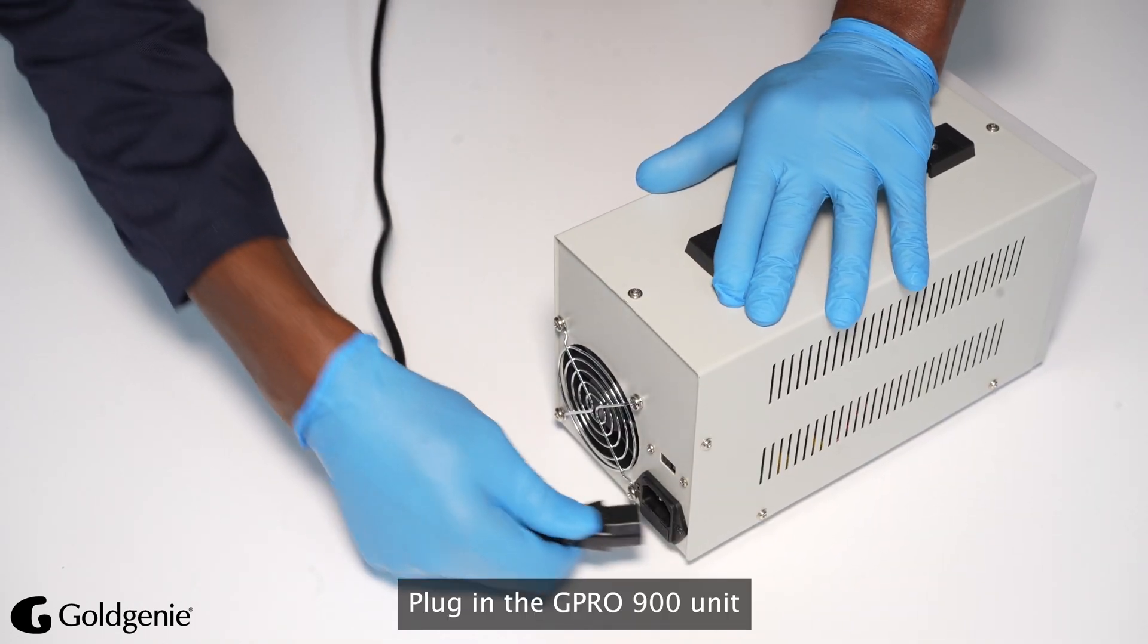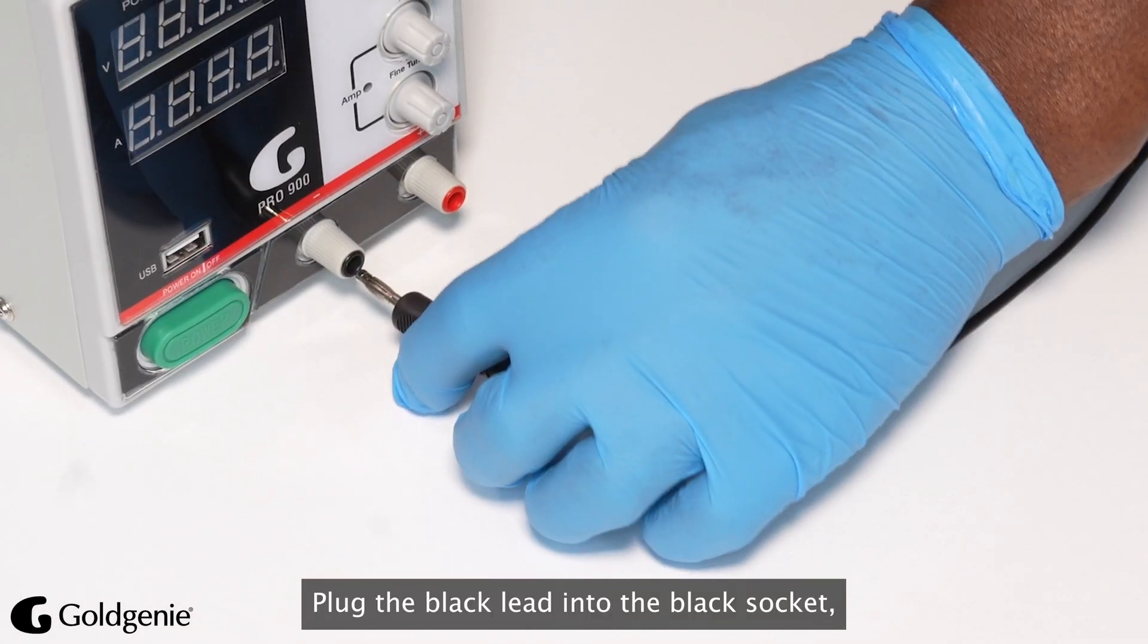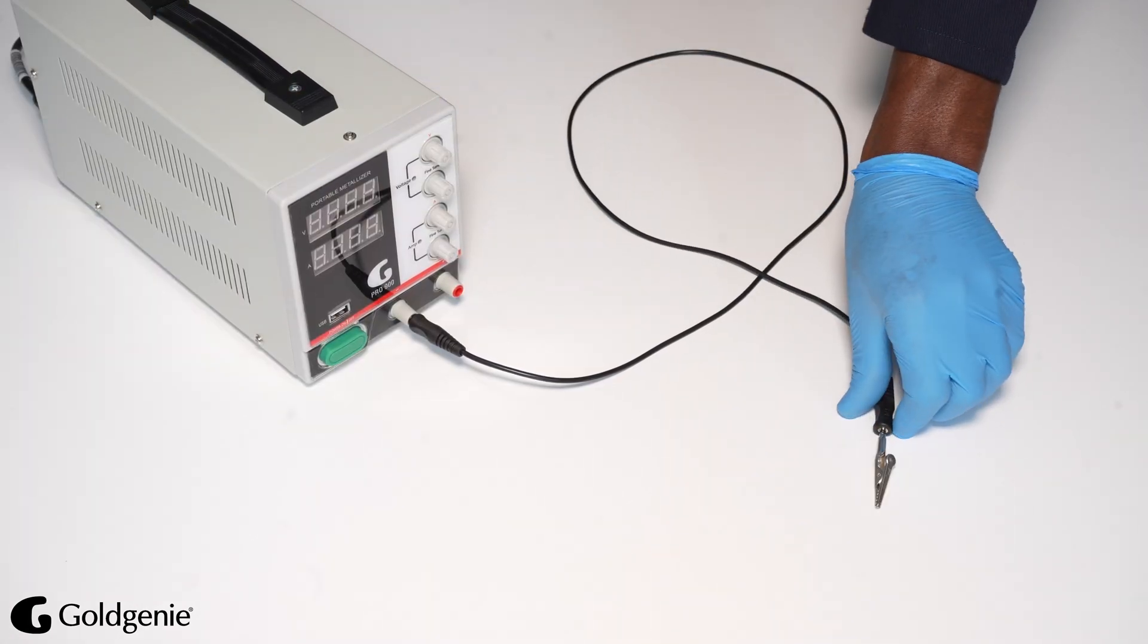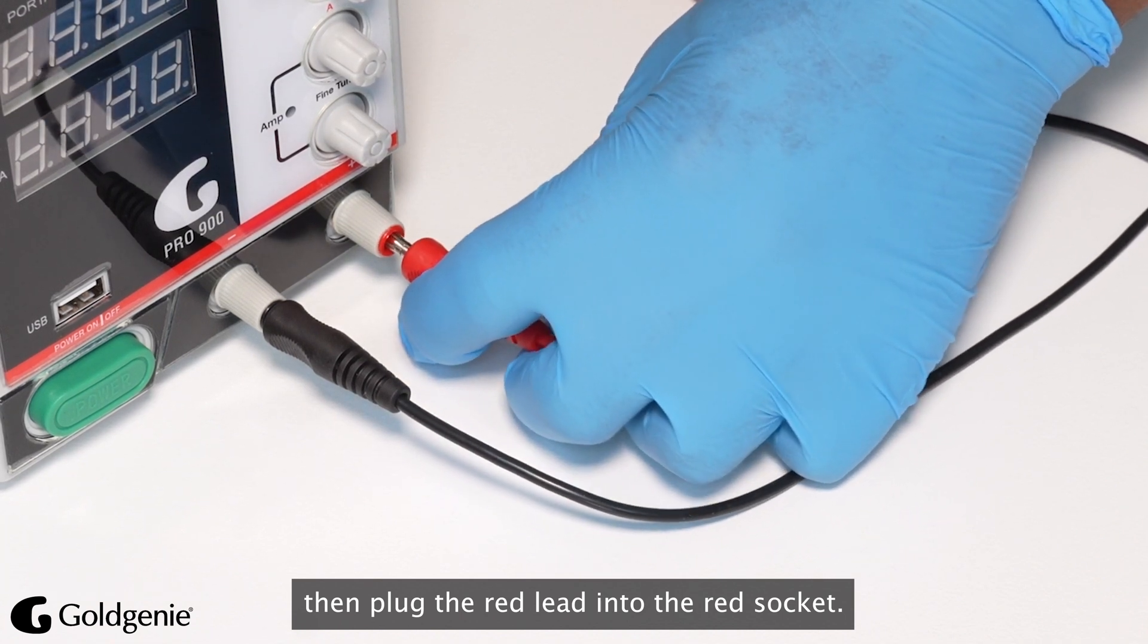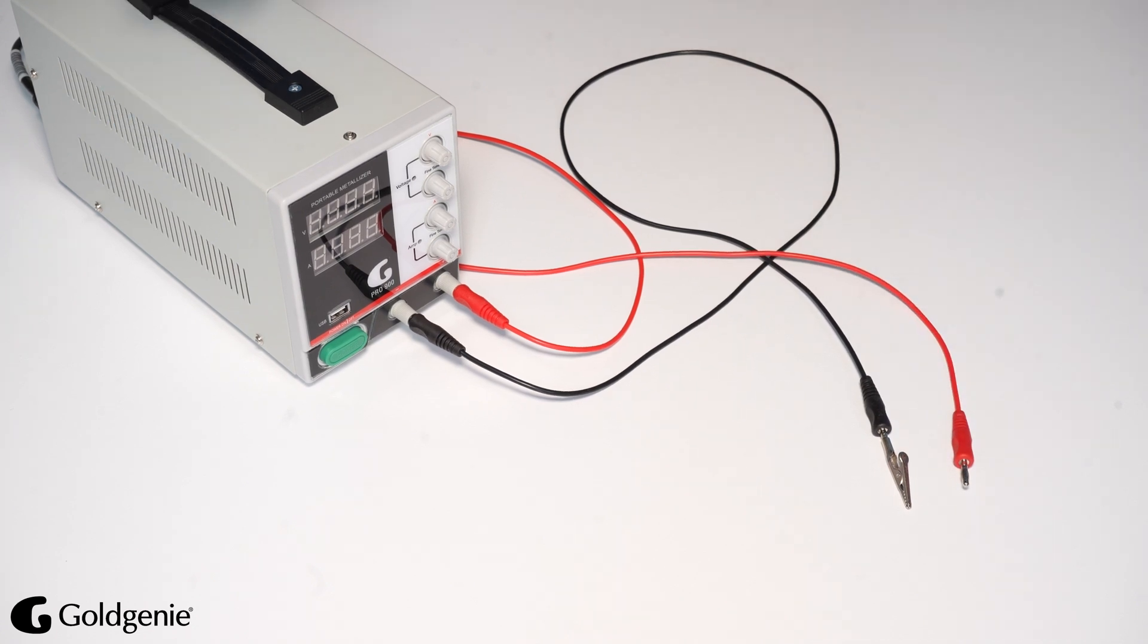Plug in the G Pro 900 Units. Plug the Black Lead into the Black Socket, then plug the Red Lead into the Red Socket.